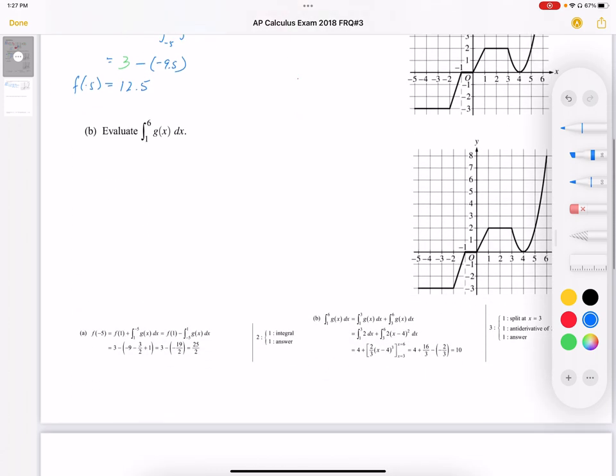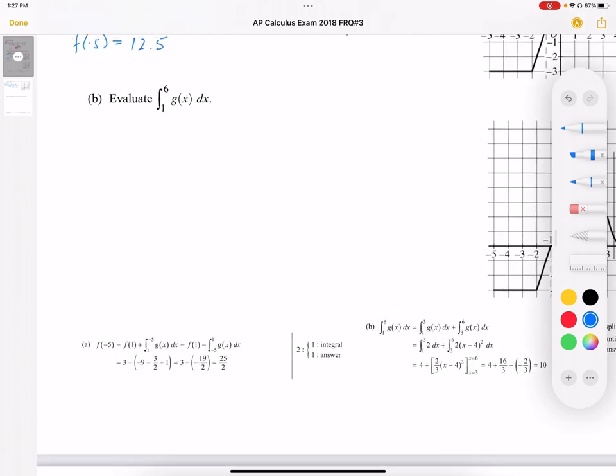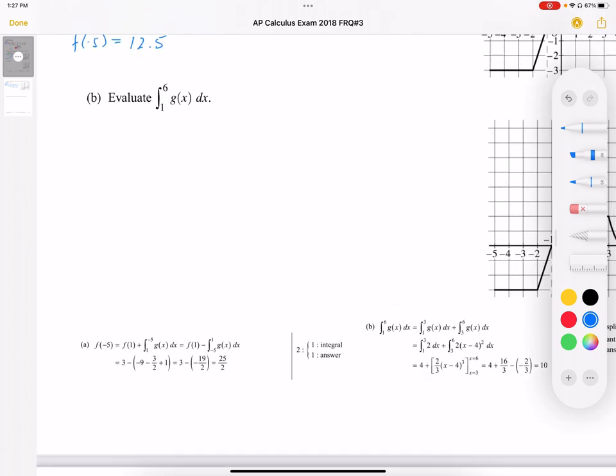When we take a look at the mark scheme here, we get one mark for the integral, and then one mark for the answer. So as long as we set up that integral, we get one mark, and then the second mark is for the answer.